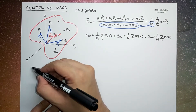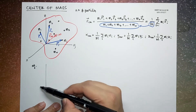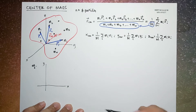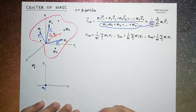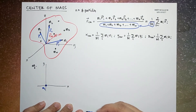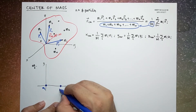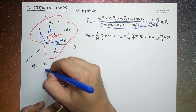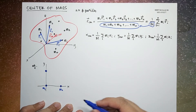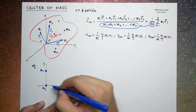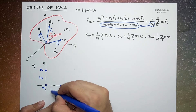As an example, let's say we have a three-particle system situated in the x-y coordinate system. The first particle m1 is at the origin. The second particle m2 is one meter away from the origin along the x-axis, and the third particle m3 is situated one meter above the origin along the y-axis. So the distance between m1 and m2 and between m1 and m3 are both one meter.